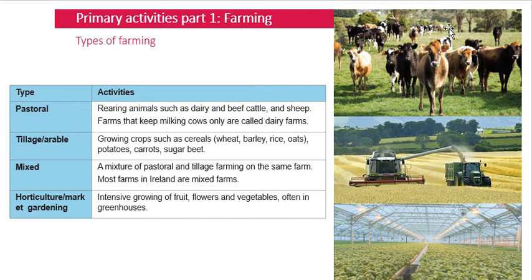The second type is tillage or arable farming — basically growing crops such as wheat, barley, potatoes, vegetables, carrots, sugar beet, and so on. Tillage farming is popular in this part of the country, particularly for wheat and barley. A very common sight at certain times of year is combine harvesters out in force, particularly in County Meath.